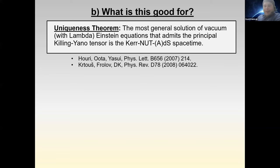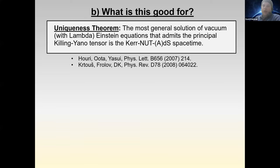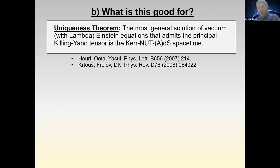This leads to a uniqueness theorem, first shown by Houri, Oota, and Yasui in a more special form and then in a more general form: the most general solution of vacuum Einstein equations (possibly with cosmological constant) that admits a principal Killing-Yano tensor is precisely the Kerr-NUT-AdS spacetime of Chen, Lu, and Pope. In fact this object can be used to derive that spacetime directly.